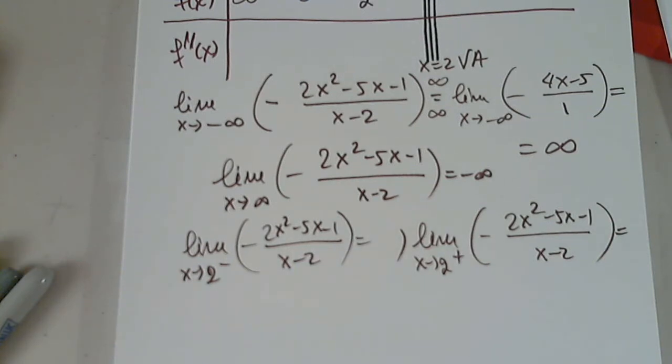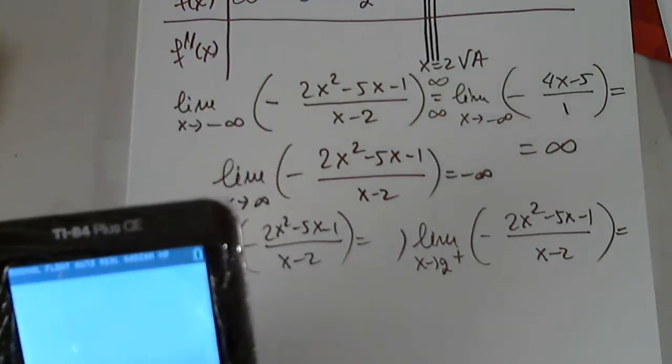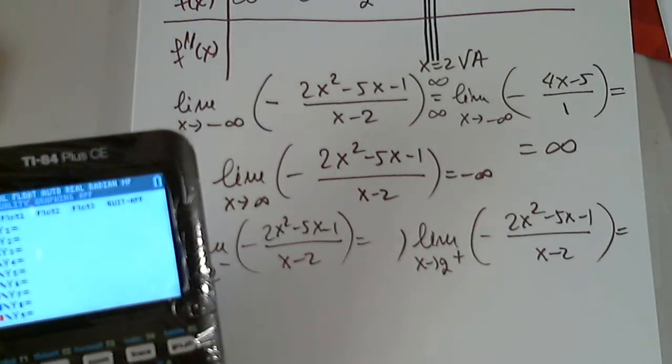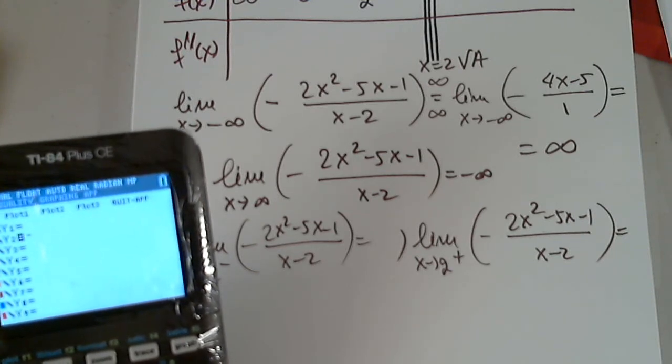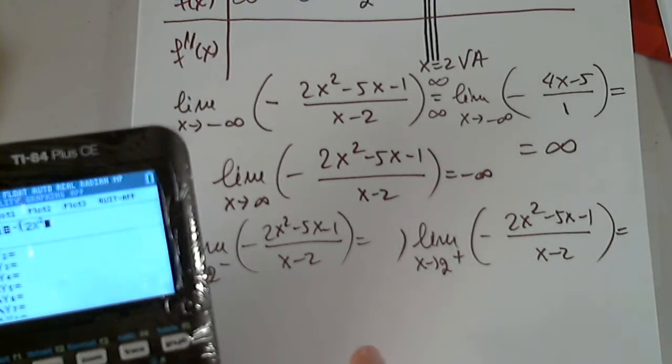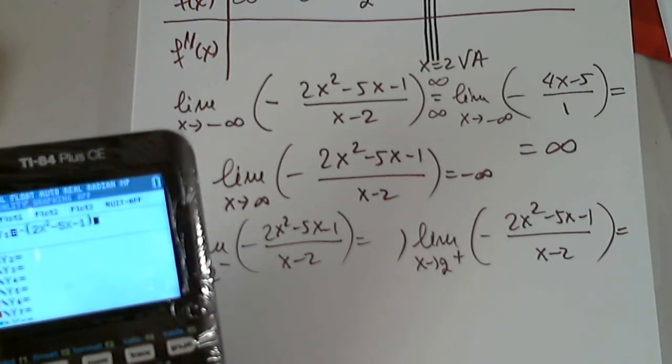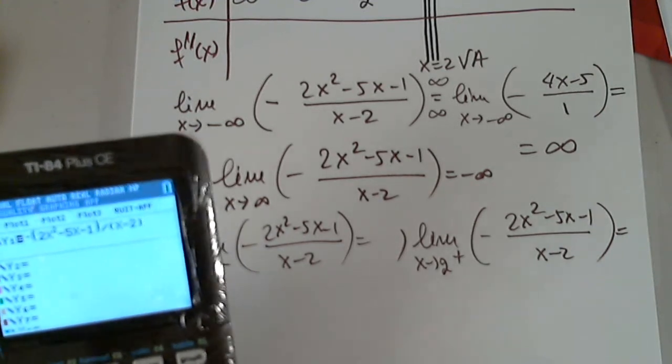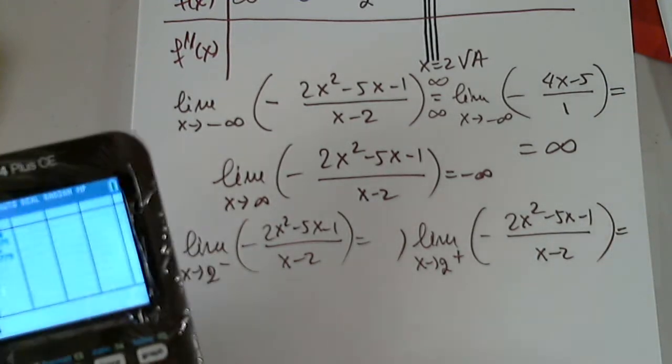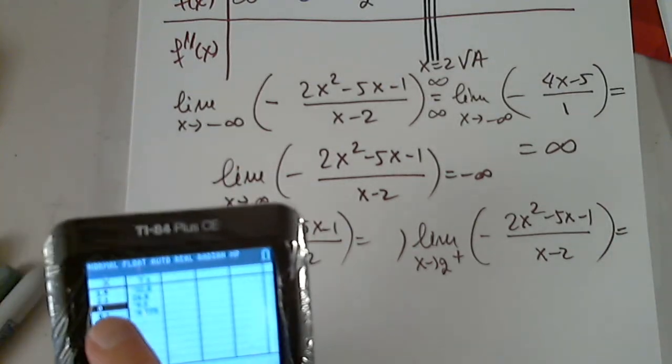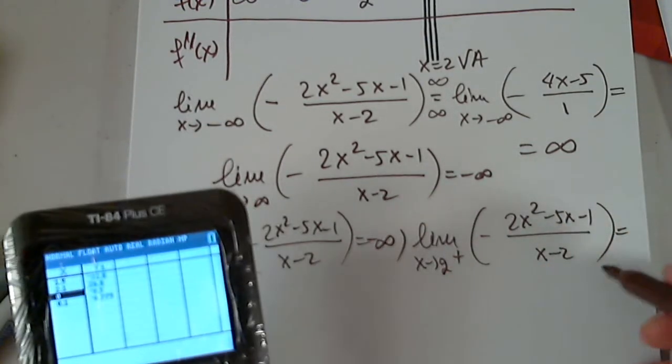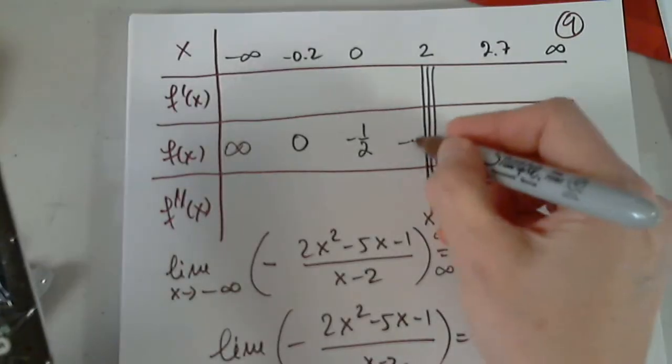I'm going to put that in as negative parentheses 2x squared and minus 5x and minus 1 and divide by x minus 2. When I go to second and table, I will plug in 1.9, and then I will plug in 2.1. When I plug in 1.9, I get negative infinity. When I plug in 2.1, I get positive infinity.